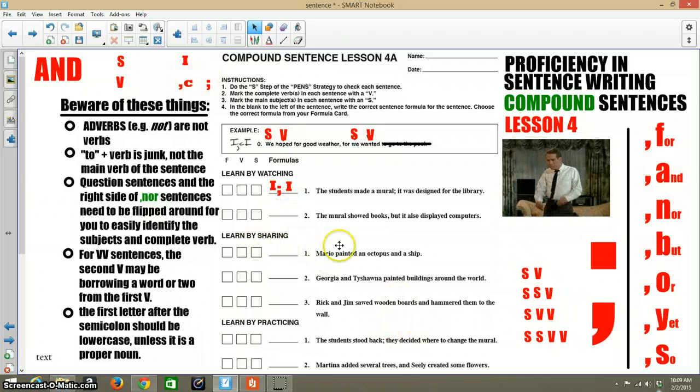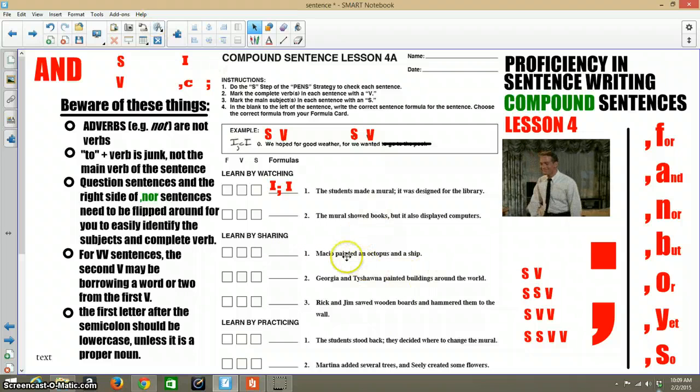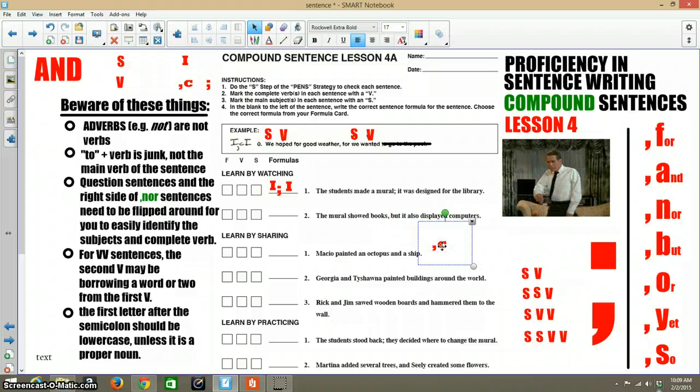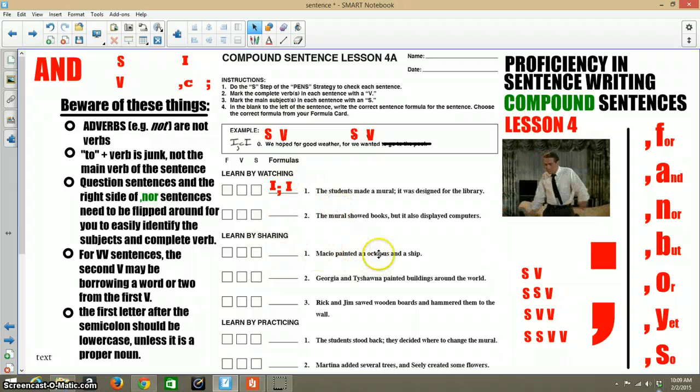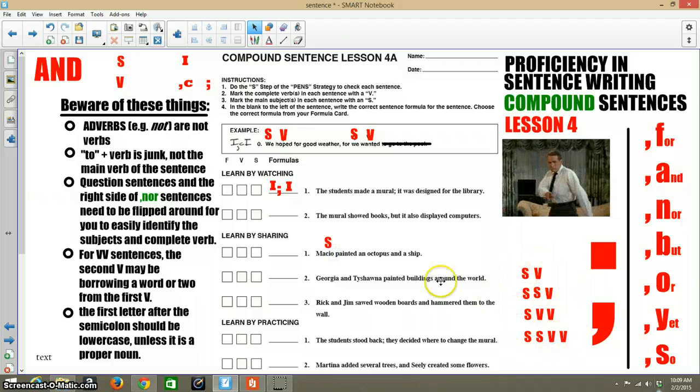If you go to learn by sharing, number one, you'll notice there is no comma fanboys, comma, comma coordinating conjunction. There's nothing like that. There's also no semicolon. So that means that this actually has a simple sentence formula.